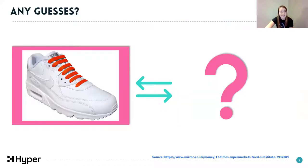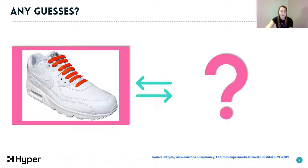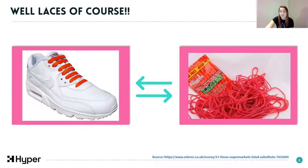Another one is some really jazzy red shoelaces on a nice white trainer. Imagine your shoelaces are broken and you're doing your online shop, so you put those in your order. Unfortunately they're out of stock, and they've been substituted for strawberry laces sweets. You'd definitely struggle to tie your laces with these - not an ideal substitution.